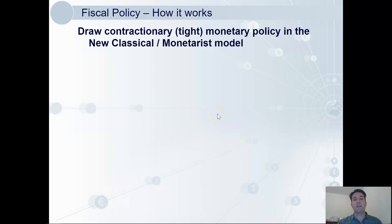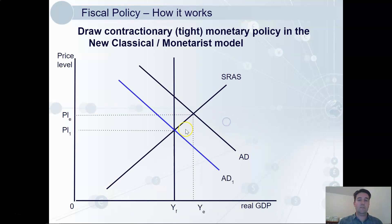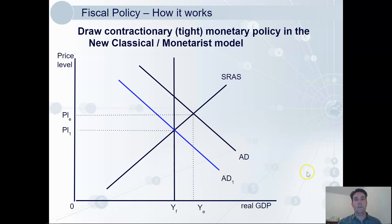We'll also look at contractionary — sometimes called tight — monetary policy. This is when interest rates are raised. What we would expect to see is a decrease in consumption and a decrease in investment, leading to aggregate demand shifting to the left. So that's how it works. The diagram is an easy one, which is nice for us.